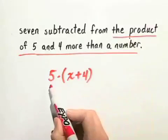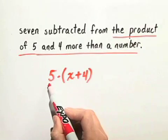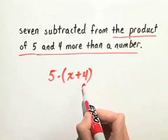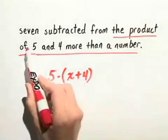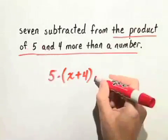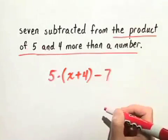So now this represents the product of 5 and 4 more than a number. And remember, 7 is being subtracted from that, so we take away 7.